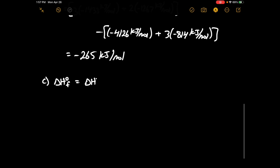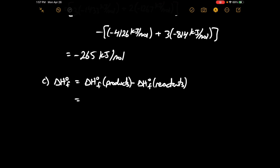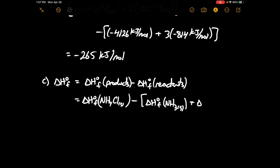For Part C, delta H°f is equal to delta H°f of the products minus delta H°f of the reactants. This is equal to delta H°f of NH₄Cl solid minus delta H°f of NH₃ gas plus delta H°f of HCl gas.